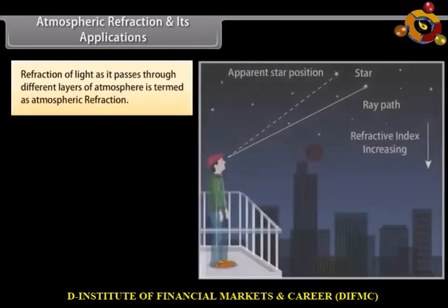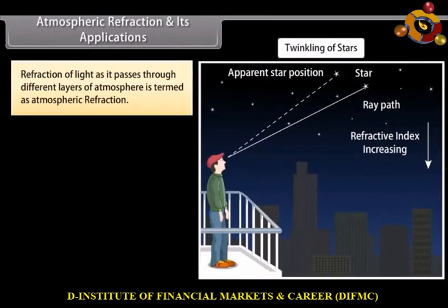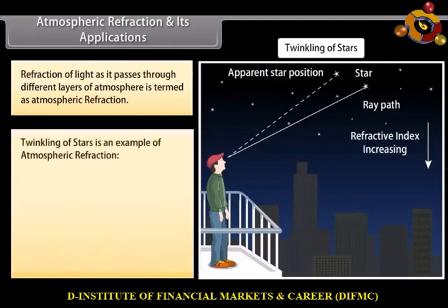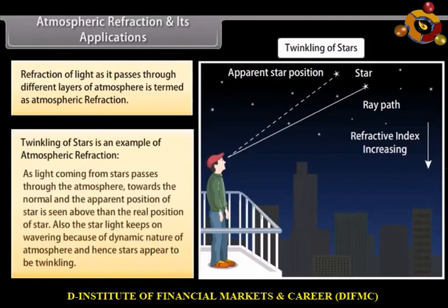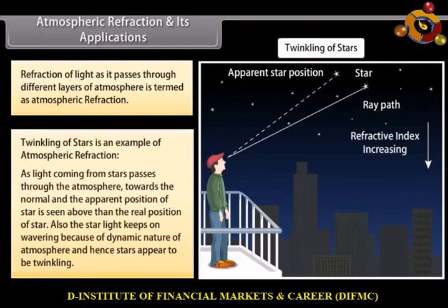Atmospheric Refraction and its Applications. Our atmosphere is not uniformly dense at any local place. Depending on local conditions, it may have hot and cool air near the ground. Hot air is lighter than cooler air and hence has a lesser refractive index than cooler air. Due to this, starlight or sunlight entering the atmosphere undergoes refraction, known as atmospheric refraction. As light coming from stars passes through the atmosphere, it bends towards the normal and the apparent position of the star is seen above its real position. Also, the starlight keeps on wavering because of the dynamic nature of the atmosphere, and hence stars appear to be twinkling.